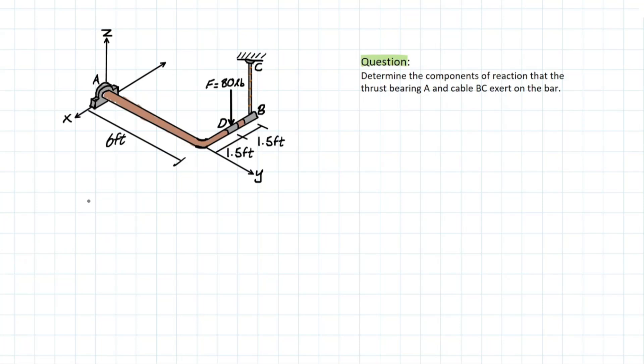So the first thing that we remember from our previous video is that for a rigid body, we know that if a support prevents translation, a force is created. And if the support prevents rotation, a moment is created.